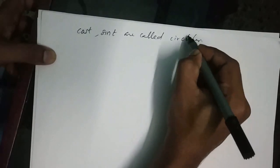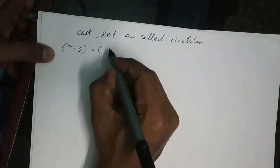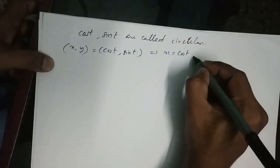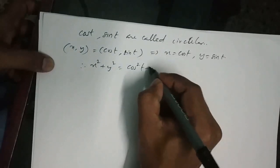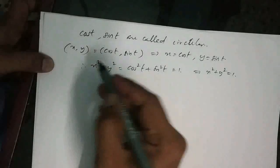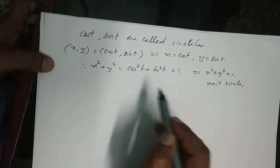We know the functions sin(t) and cos(t) are called circular functions. Because if we denote cos(t) and sin(t) as x and y, that is x = cos(t) and y = sin(t), then x² + y² = cos²t + sin²t = 1, which is a unit circle. So cos(t) and sin(t) are called circular functions.